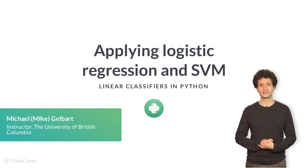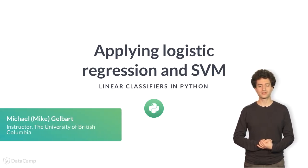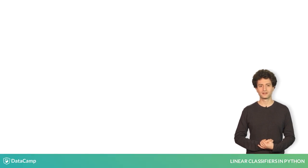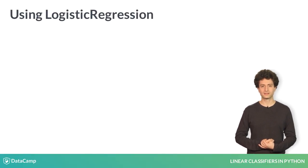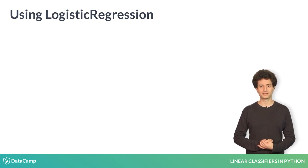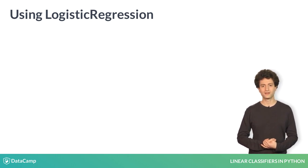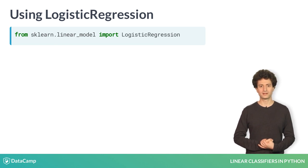In this video, we'll see how to run Logistic Regression and SVM with scikit-learn. The Logistic Regression class in scikit-learn is used just like the other models you've seen in the prerequisite course. First, we import Logistic Regression from scikit-learn. You'll notice we're importing from linear_model because Logistic Regression is a linear classifier.